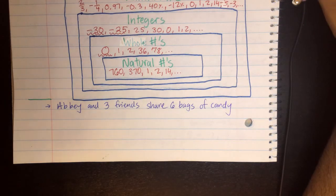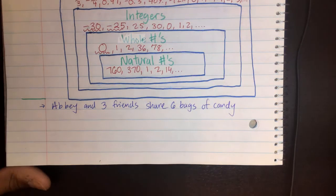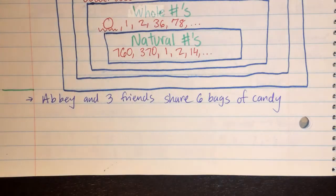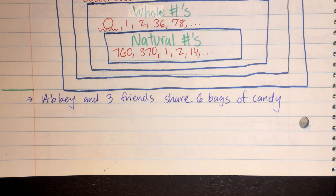Abbey and three friends share six bags of candy. Now, once we start thinking about this, we already can kind of start painting the scenario in our head, right? We already know there's this many people, we already know that they're splitting this item or this number. And so that's what we're kind of thinking about.